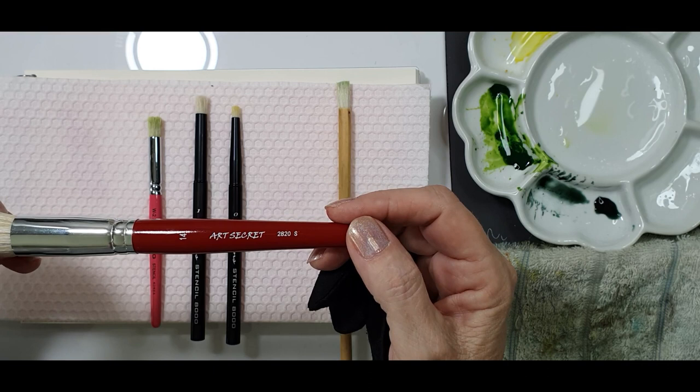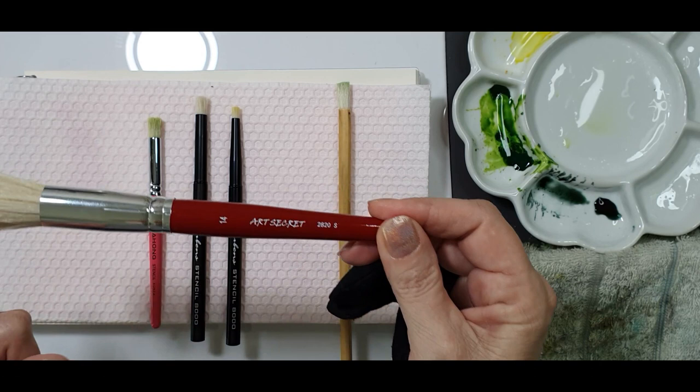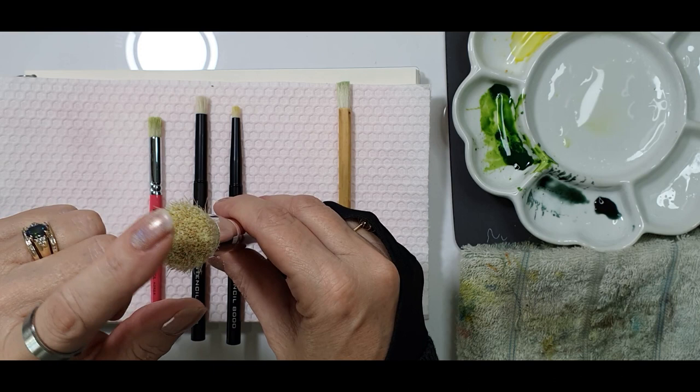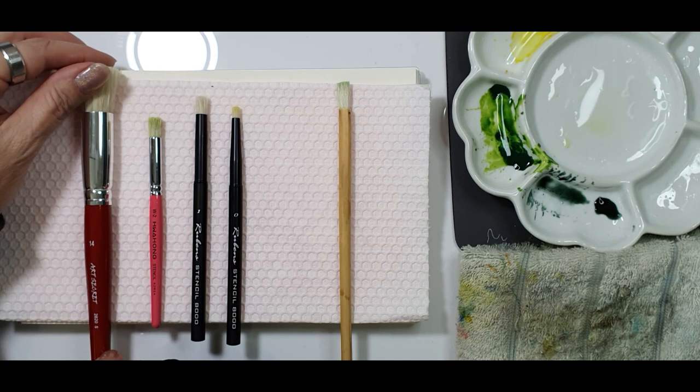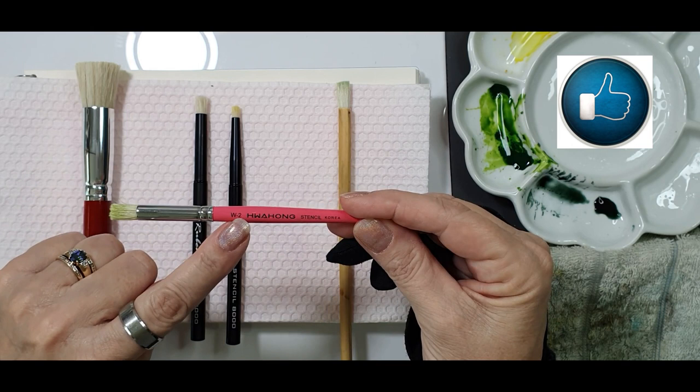We're starting off with the Art Secret number 14. This is a rather big brush, a little bit cumbersome I would say but it does its job. It's fairly hard hog hairs and it holds a lot of water. So when you use it, try to dab it out or dry it out with a towel before you start using it as a stencil.